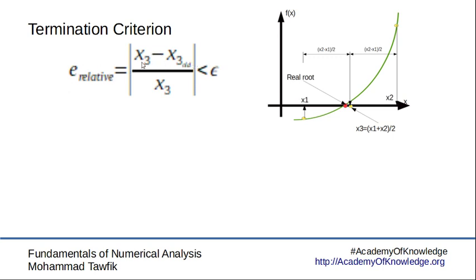Here we suppose that the new x3 is a better approximation, so this is the more accurate value. Now we are seeing whether the change that happened in finding a new x3 is very small.